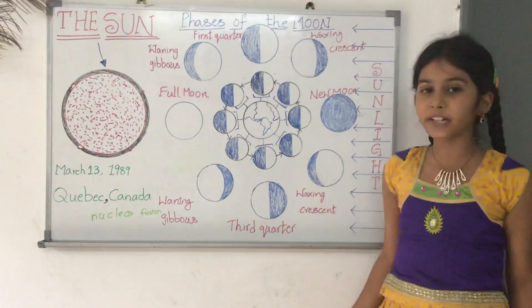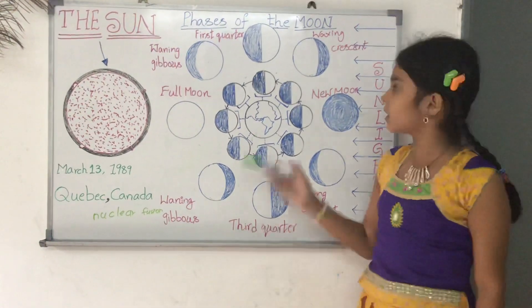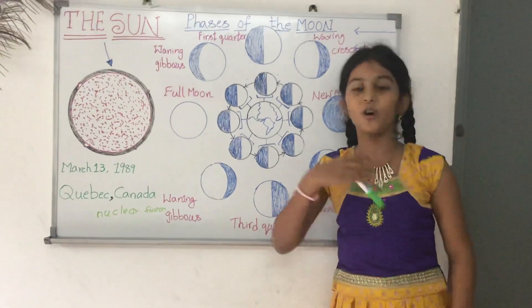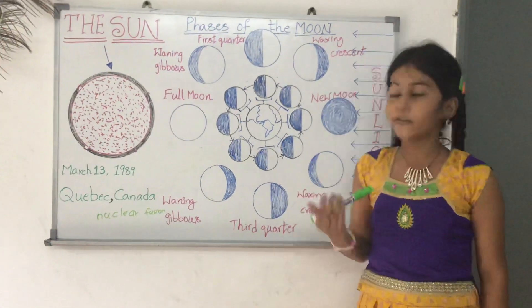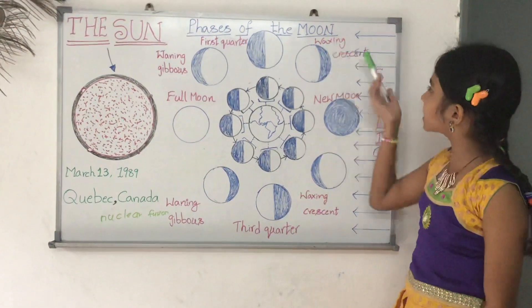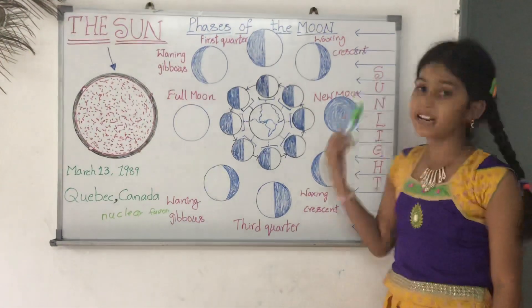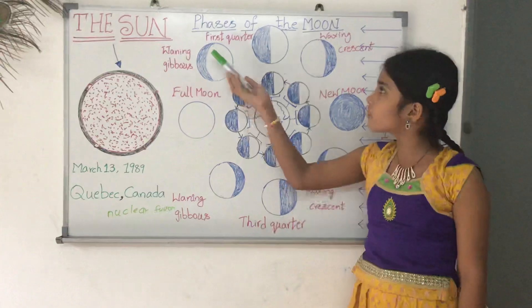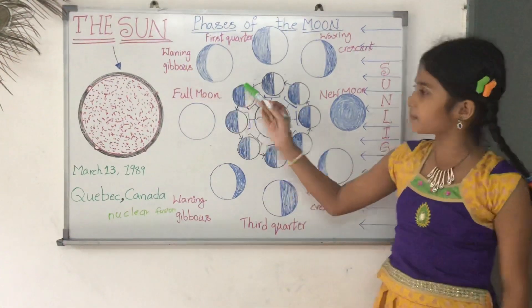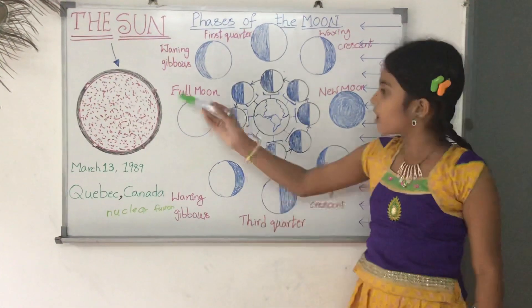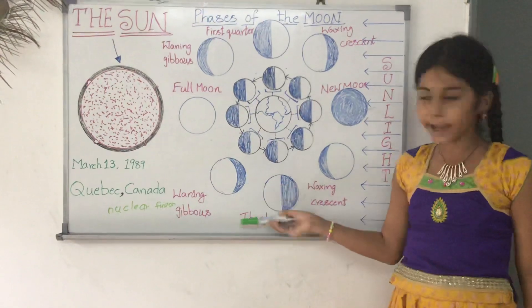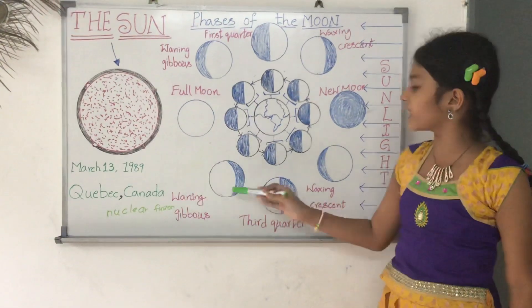Now, I am going to tell you about the moon changing shapes in order. The first one we get is waxing crescent. Number 2, first quarter. Number 3, waning gibbous. Number 4, full moon. And then, again, we get waning gibbous.